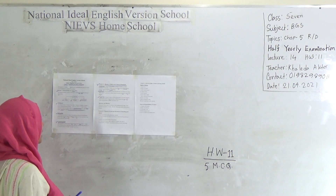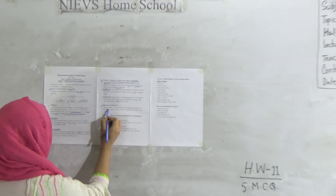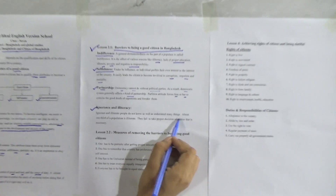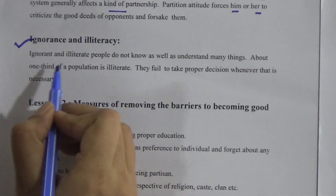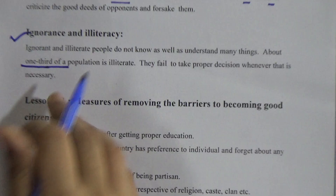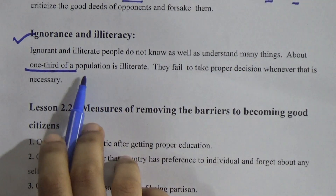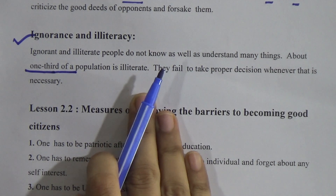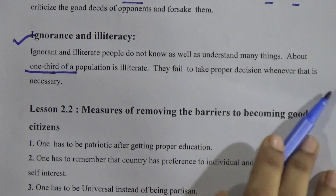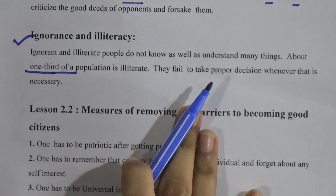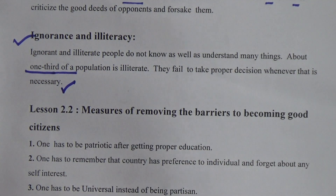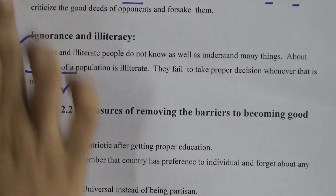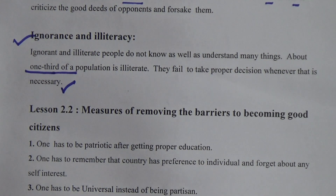The fourth barrier is ignorance and illiteracy. Ignorant and illiterate people do not know or understand many things. Without education or knowledge, we cannot understand everything properly. About one third of the population is illiterate in our country — a huge number. They fail to take proper decisions whenever necessary. Without knowledge and without education, they fail to take proper decisions. So this is a great barrier to being a good citizen.